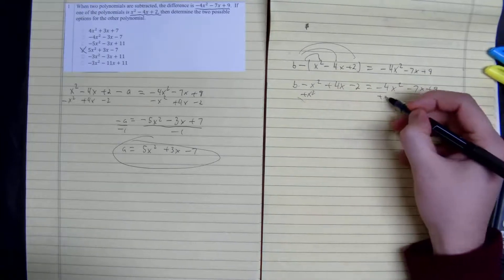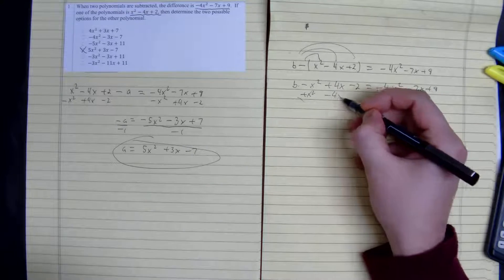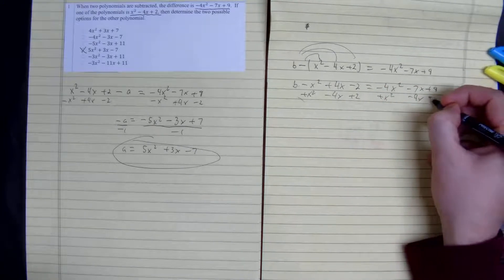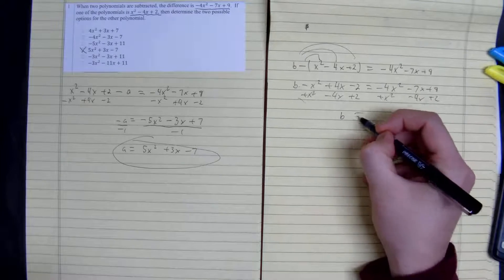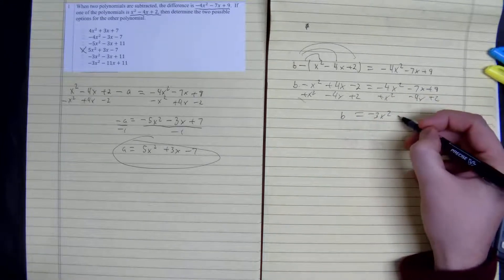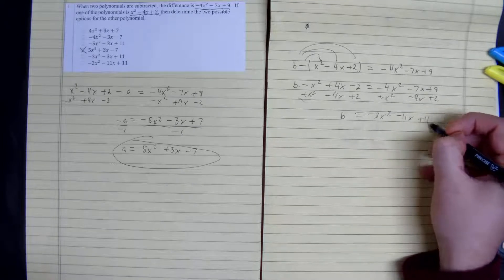Add x squared, subtract 4x, add 2. We get B is equal to negative 3x squared minus 11x plus 11.